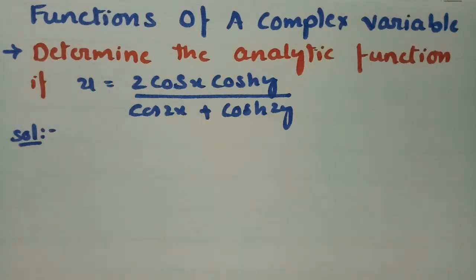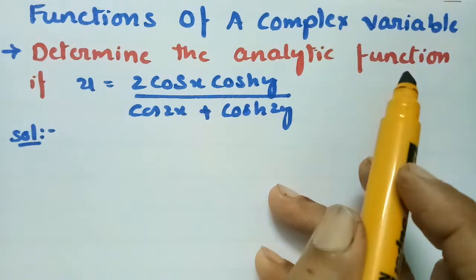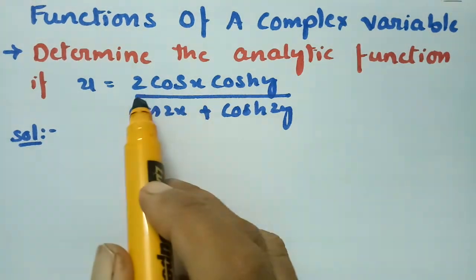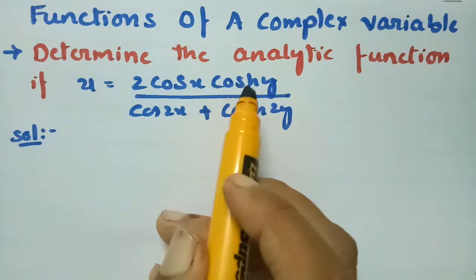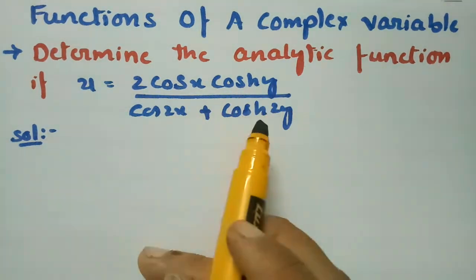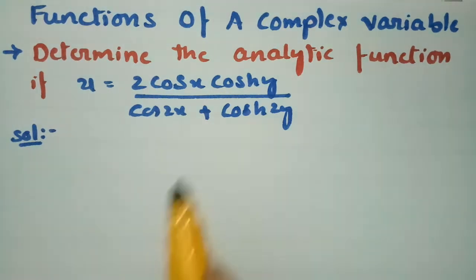The most important problem is given a solution in this video. This problem is related to the functions of complex variables. I am going to determine the analytic function if the real part u is given as 2cos(x)·cosh(y) divided by cos(2x) + cosh(2y).